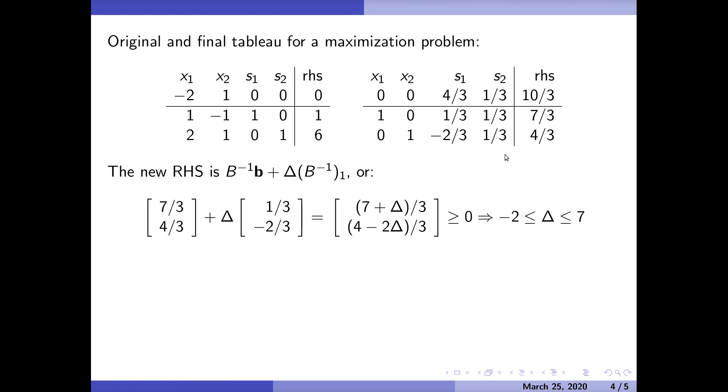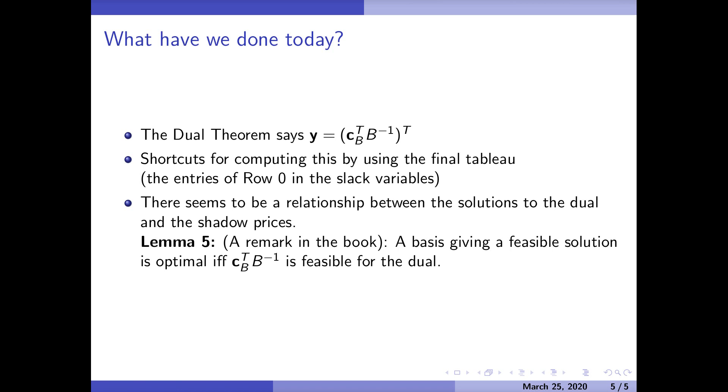Now let's compute the shadow price for the first constraint. Notice I'm using my coefficients from here - these are the c_B coefficients. The first value is two and the second one's minus one. Then we take two times our first solution and minus the second, and we end up with 10/3 plus 4/3 delta. What is the shadow price of the first constraint? That's what happens when delta equals one, so your new value of z is going to increase by 4/3, and you might notice that that is the same thing as that. I wonder if that was coincidence? It was not.